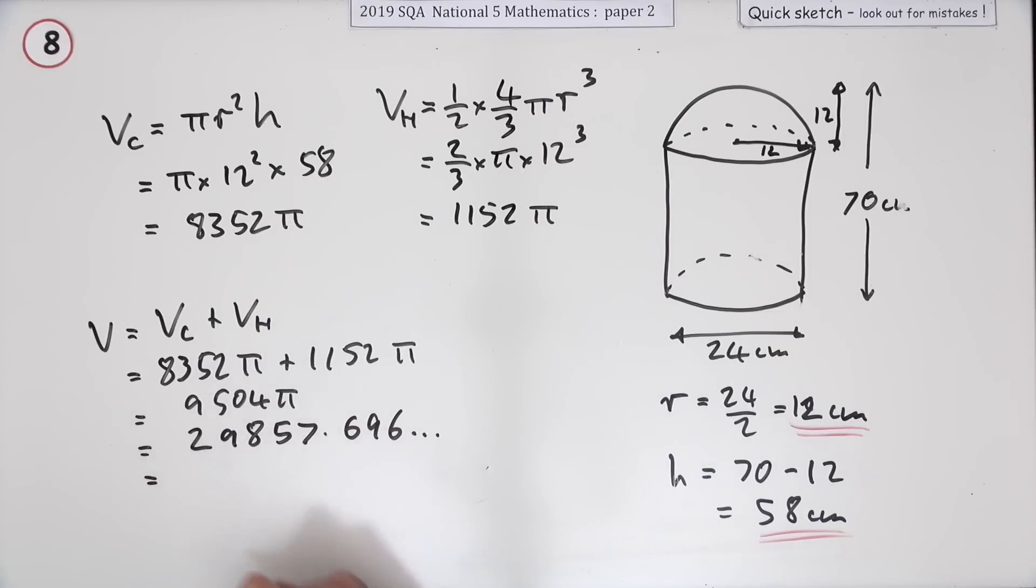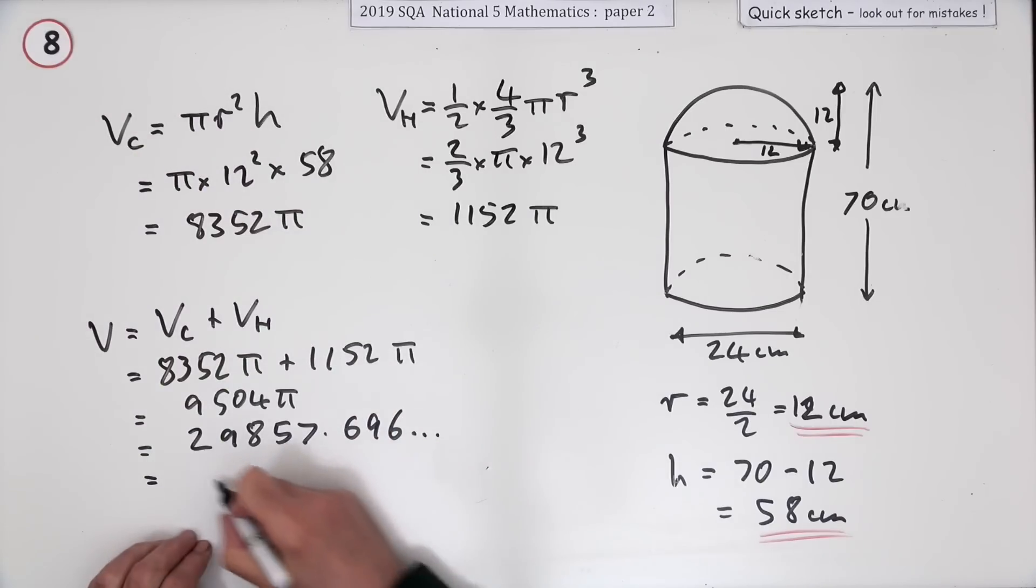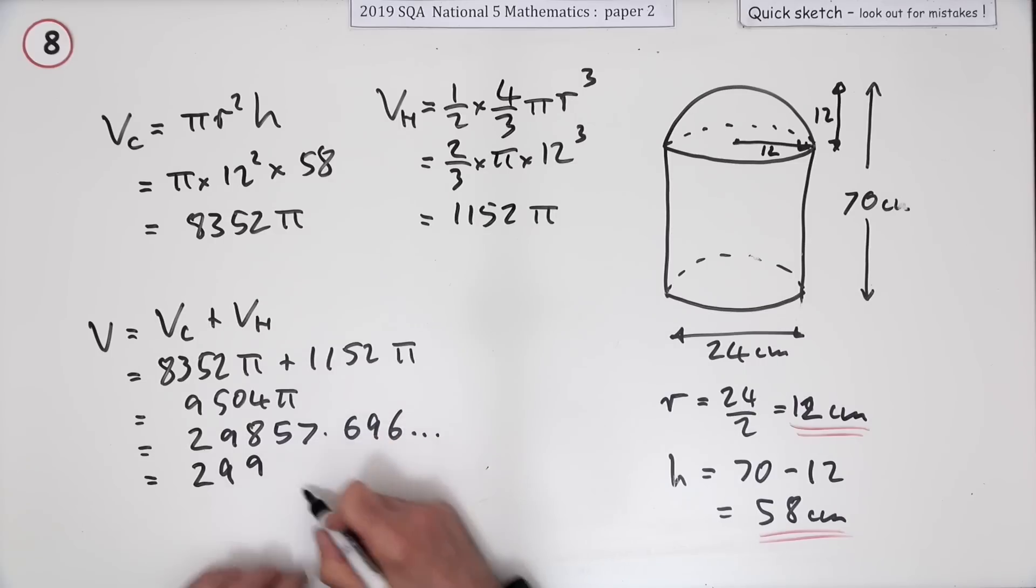It said it wanted it to 3 significant figures. One, two, three. That'll be 29, with a 57 after the 8, that'll have to go to another 9. And to keep that 2 in the correct column, these two numbers will have to become zeros. Don't put in a decimal point. Well you could put one and there's nothing after it, but don't put a decimal point and then three zeros or whatever. It's just this part here.